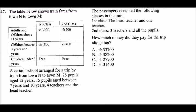Question number 47. The table below shows train fares from town N to town M. First class: adults and above pay 3,000, second class pay 2,700. Children between 3 and 11 years: first class pay 1,800, second class pay 400. Children under three years travel free.